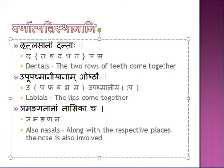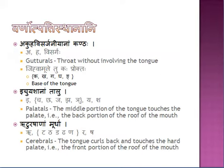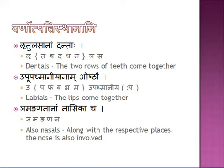So these five are the sthanas: kantha, jihvamula (base of tongue), talu, murdha, danta, and oshtha. In addition, nyamanganam nasikacha — for the production of the last letter of each varga, along with the respective sthana, the nasika (nose) is also involved. Kantha/jihvamula plus nasika produces Ng; talu plus nasika produces Ng; murdha plus nasika produces Na; danta plus nasika produces Na; and oshtha plus nasika produces Ma. These five are called anunasikas.